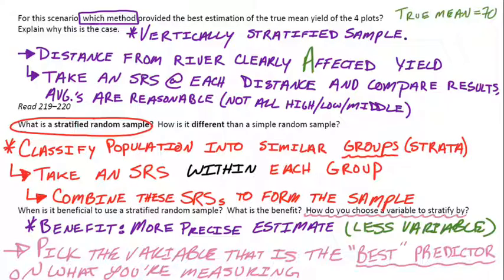Another example: if I'm measuring the average height of a Lake Park senior, there's a big difference probably between the average height of boys and girls, so I could use gender as strata. Also, the average height of freshmen is going to be a lot different than the average height of seniors, so I could use what class you're in as well.